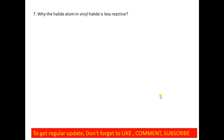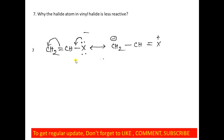The seventh question: why is the halide atom in vinyl halide less reactive? A double bond has higher bond energy and is not easy to break, while a single bond has lower energy and is easier to break. In the C–X bond of vinyl halide, the lone pair on the halogen atom delocalizes through resonance to the vinyl group, giving the C–X bond double bond character. As a result, the C–X bond is difficult to break, and that is why the halide atom in vinyl halide is less reactive.